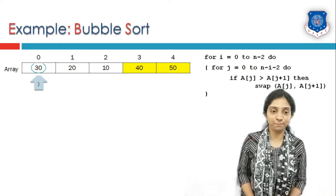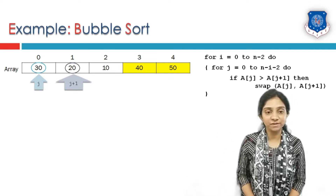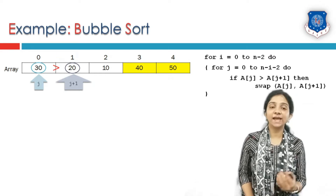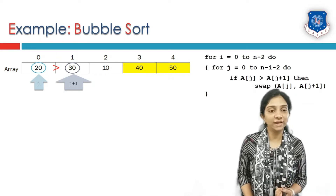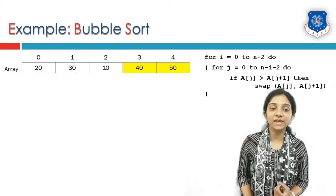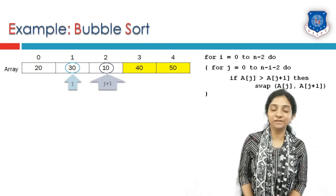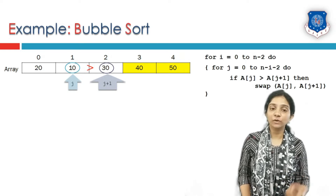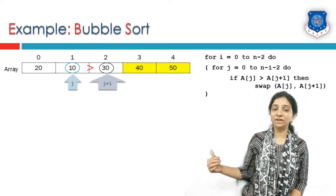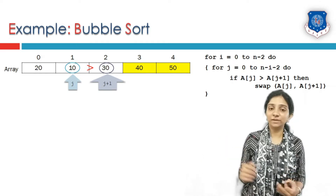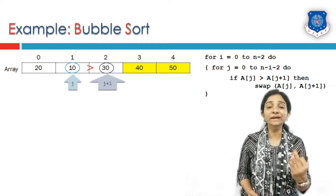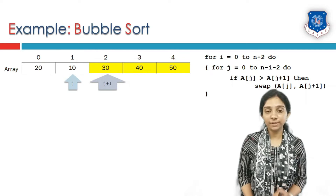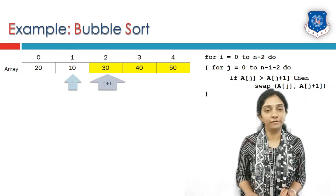Let us see the next pass. J is initialized to index 0, j+1 is at index 1. Is 30 greater than 20? Condition is true, so swap. J is incremented and j+1 is at index 2. Is 30 greater than 10? Condition is again true, so swap these elements. We no longer increment j so that j+1 does not point to a sorted element. Pass 3 ends and 30 is now sorted.